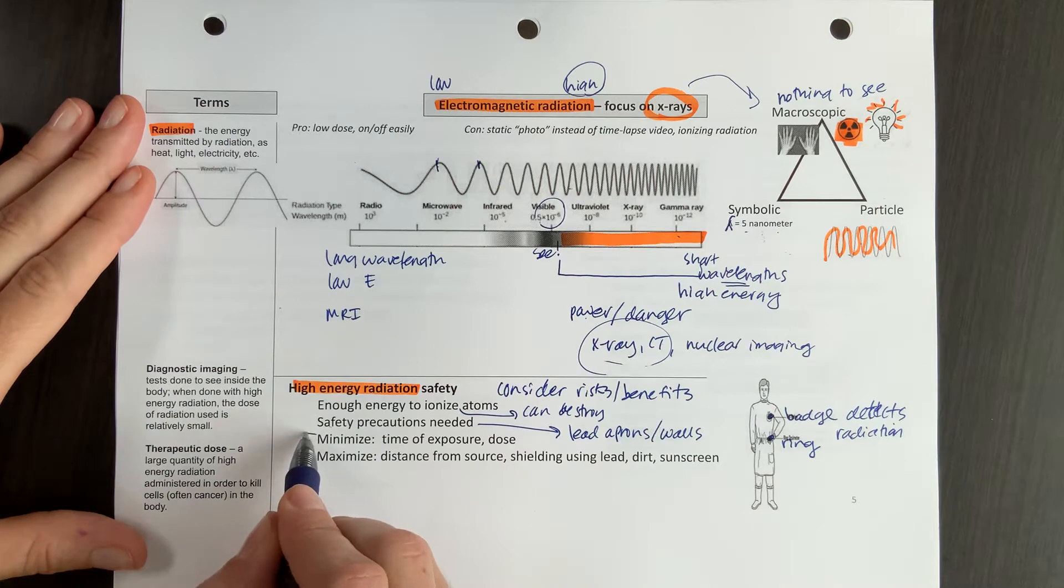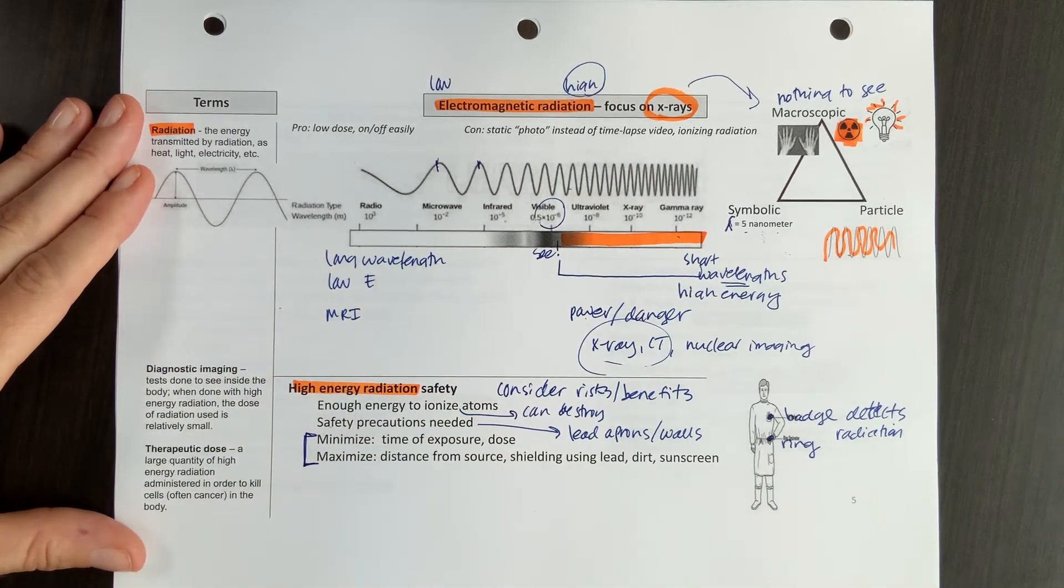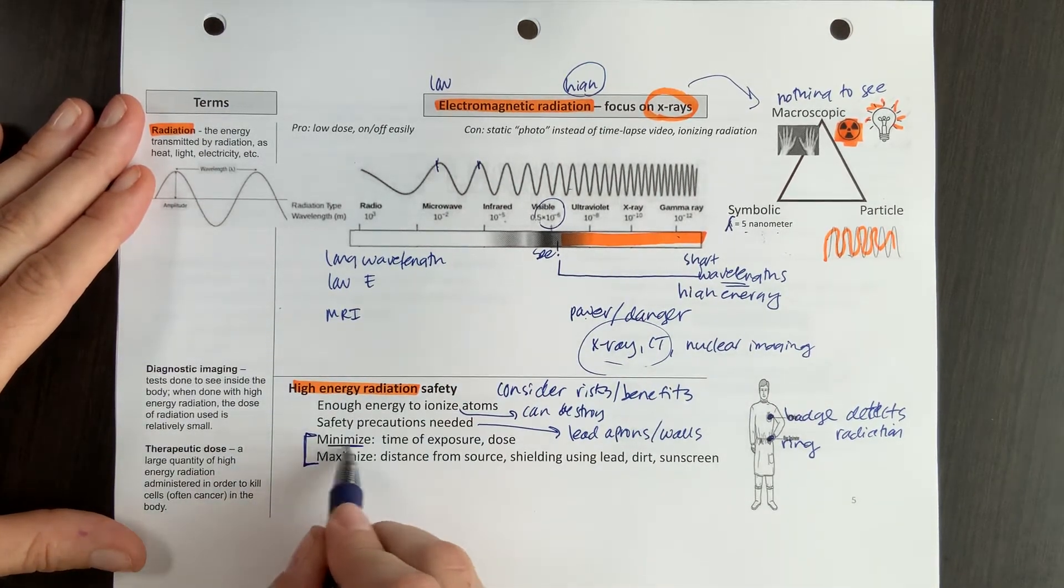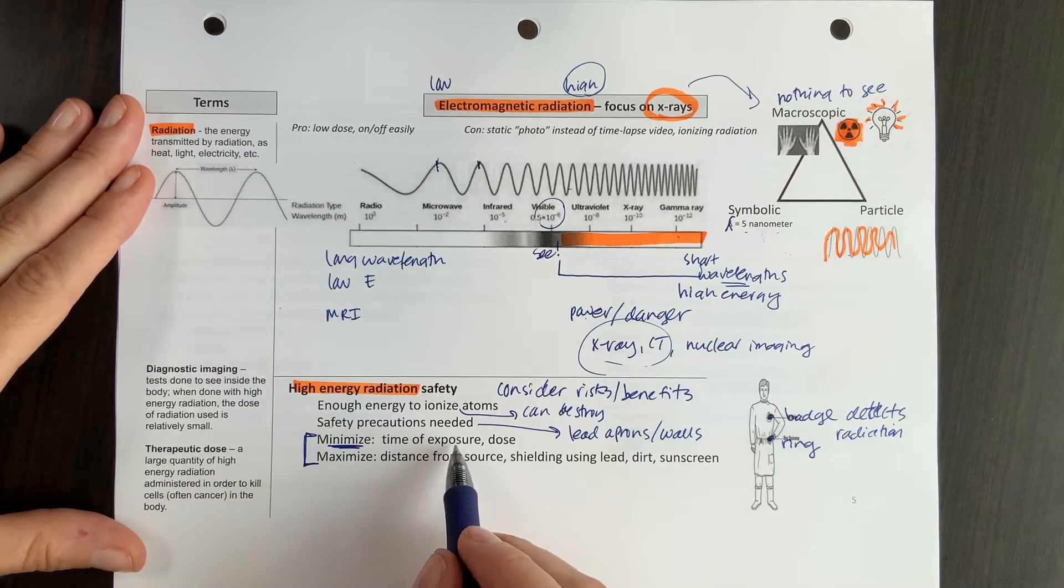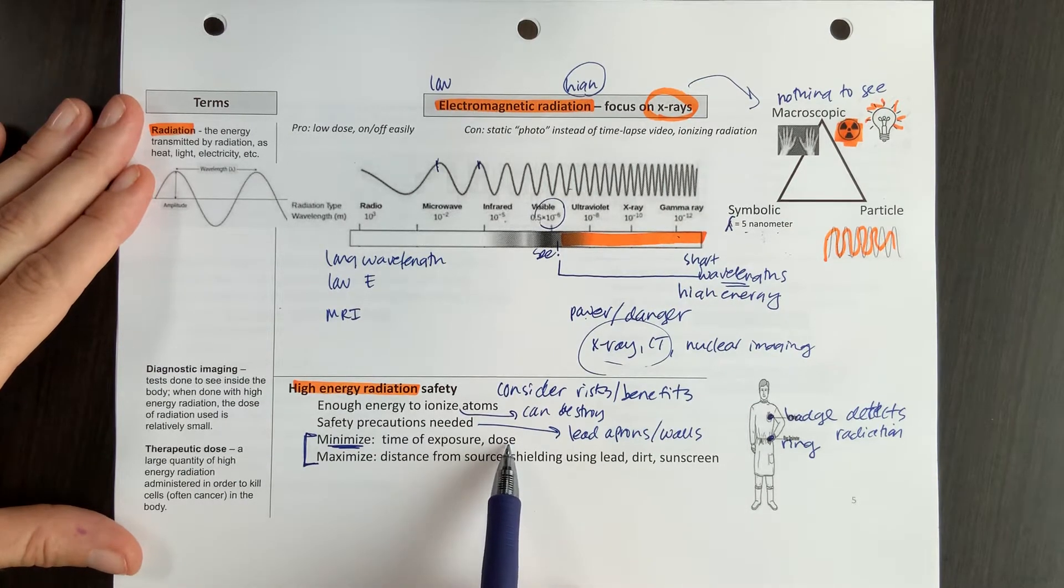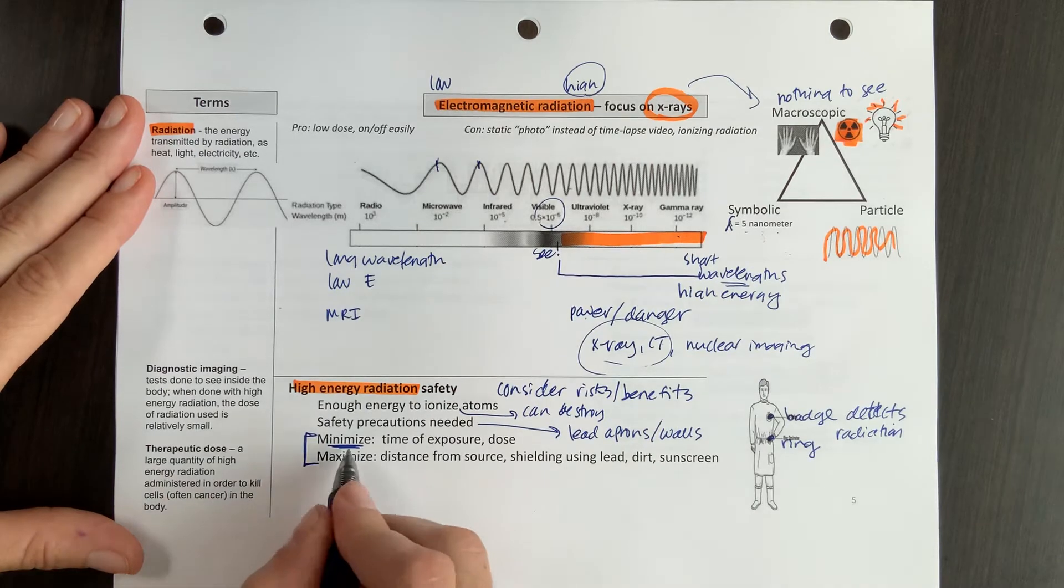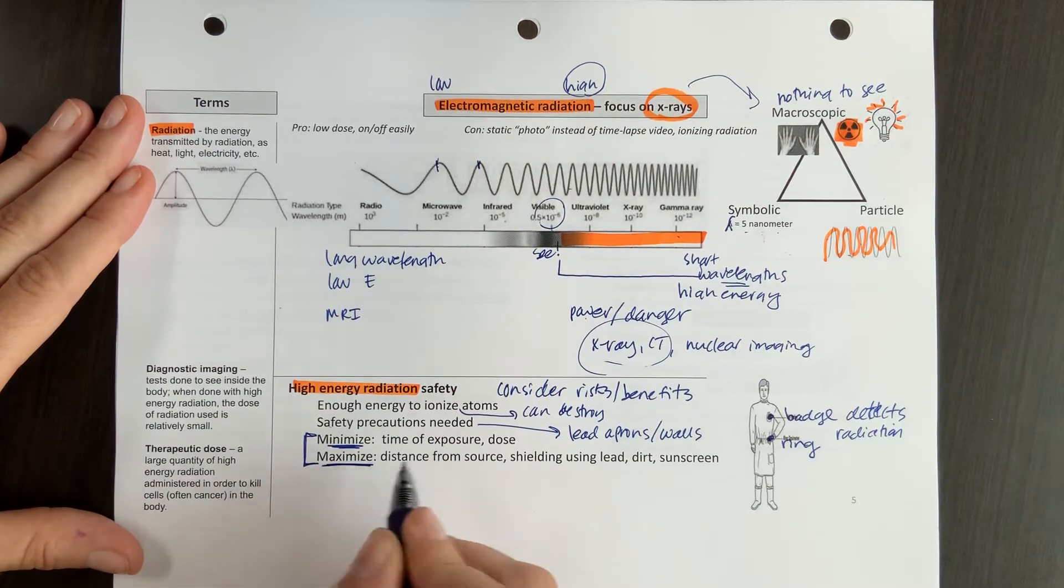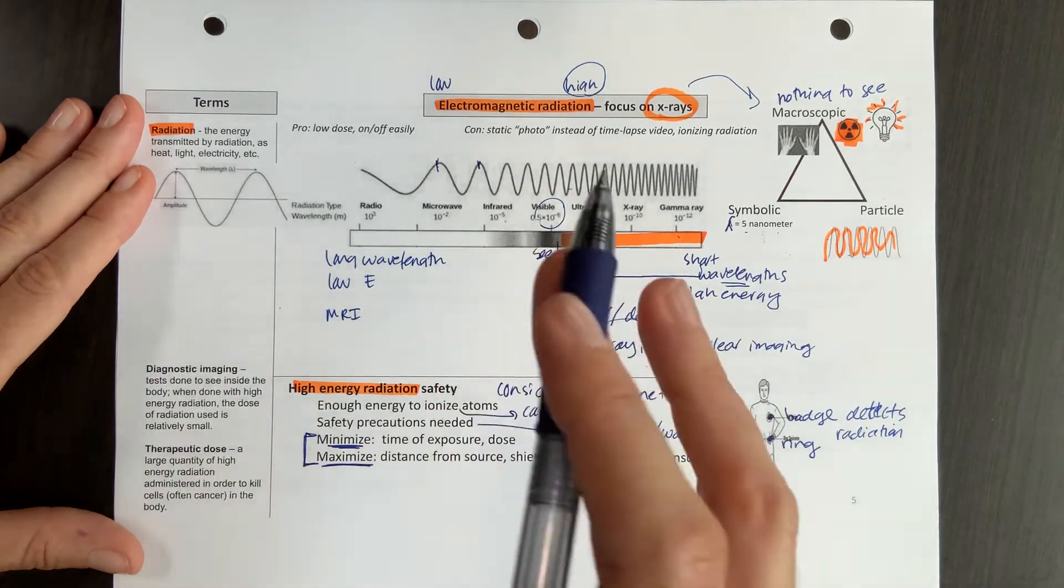So those are some of the physical things we can do. Also, this is just broad principles for how we're going to stay safe around high energy radiation. We want to minimize the time that we're exposed and the dose. So don't be in the room with the patient. You see your dentist assistants and x-ray assistants step out of the room. And if you do have to have an x-ray, have a small dose. You do have to have nuclear imaging, have a small dose. So minimize time and dose. And then maximize your distance from the source. So get as far away from that nuclear reaction as possible.